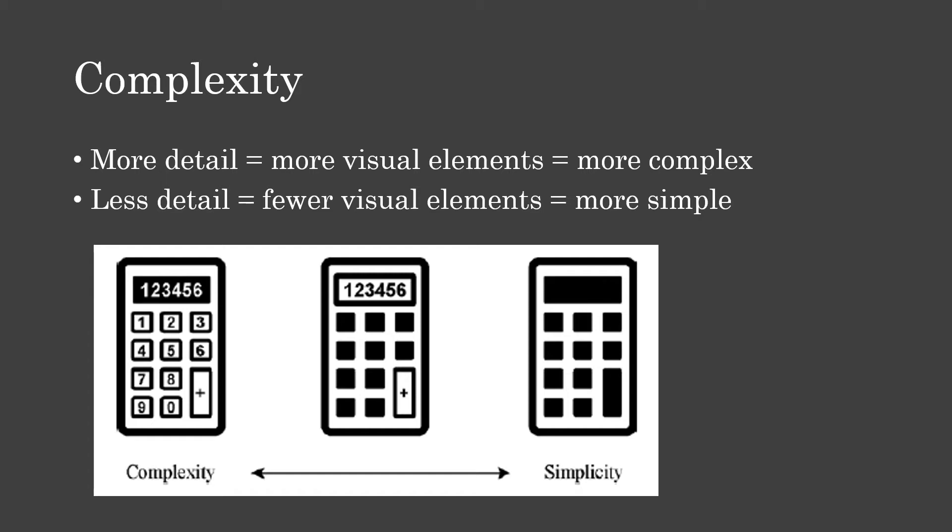Our next property is complexity. Complexity, or simplicity on the other end of the spectrum, refers to how visually complex or simple a pictogram is. More visual elements and more details make it more complex; fewer visual elements make it more simple. There's been a lot of studies done around signage and cognition, user interface, and how people react to signs and are able to perform tasks. This property is a good example of the importance of complexity or simplicity depending on what your pictogram's use will be.